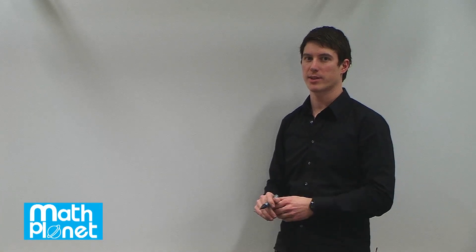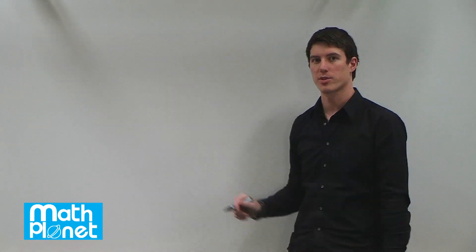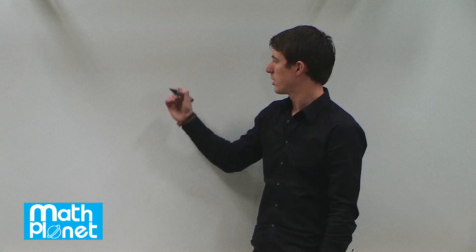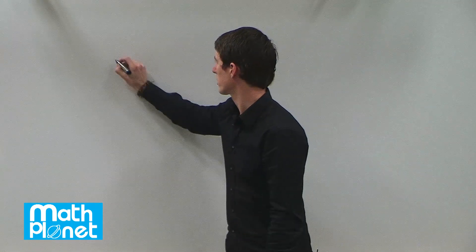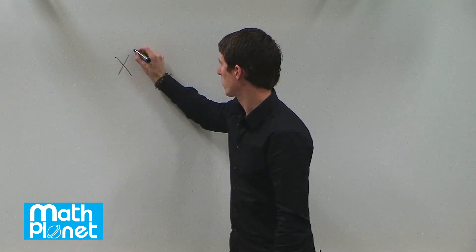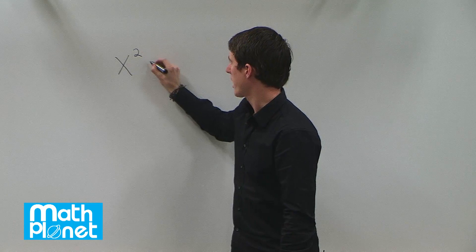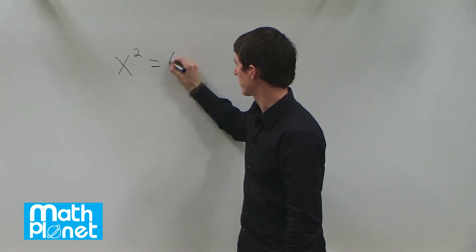Let's do a couple of basic algebraic equations where we solve for x, where we have squares — quadratic formulas — one being x squared equals 64.